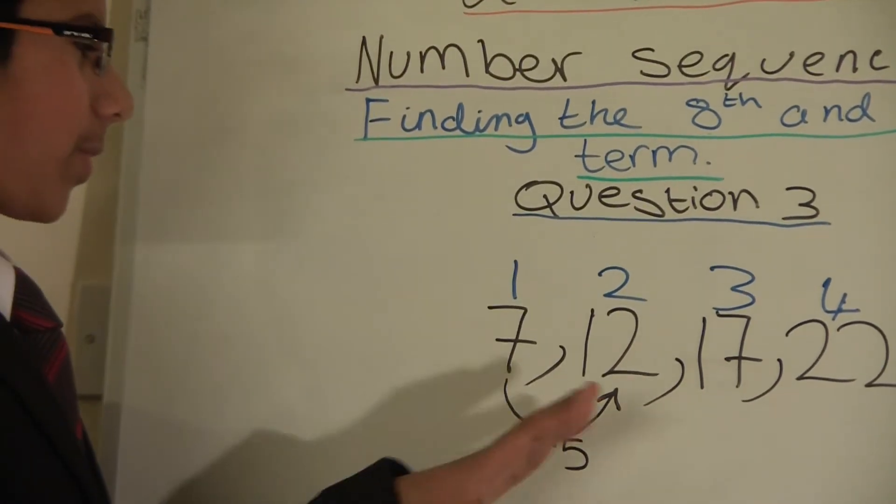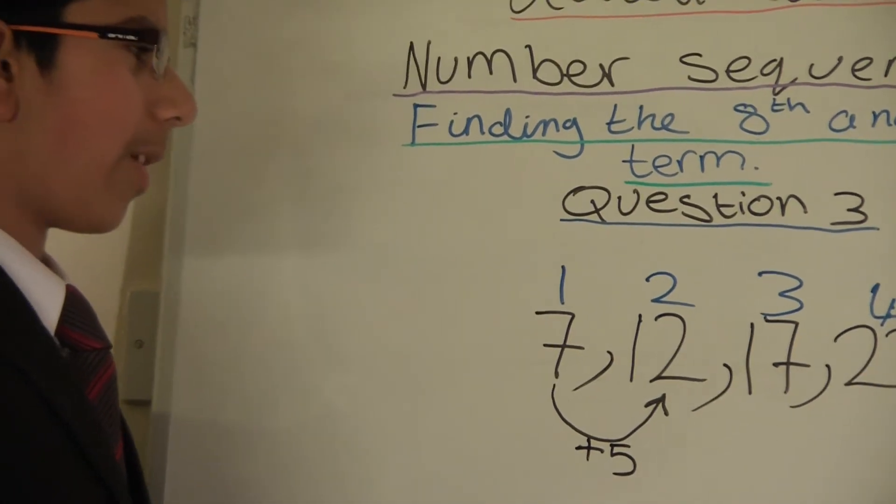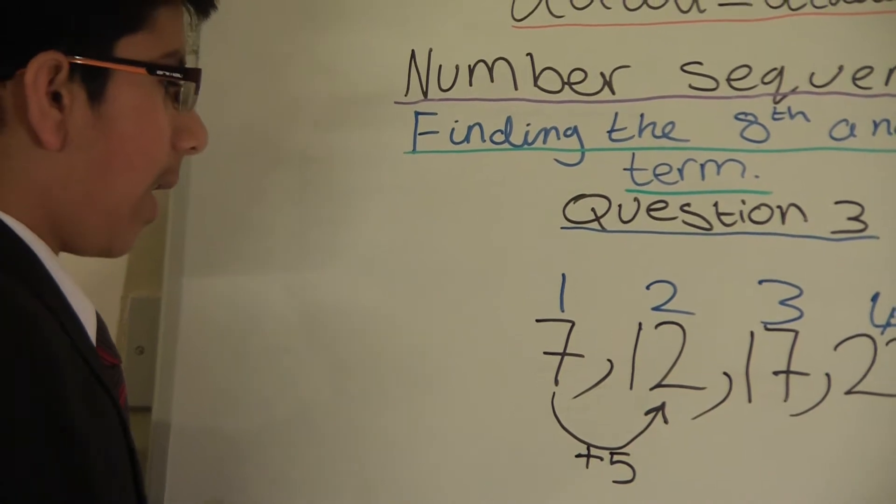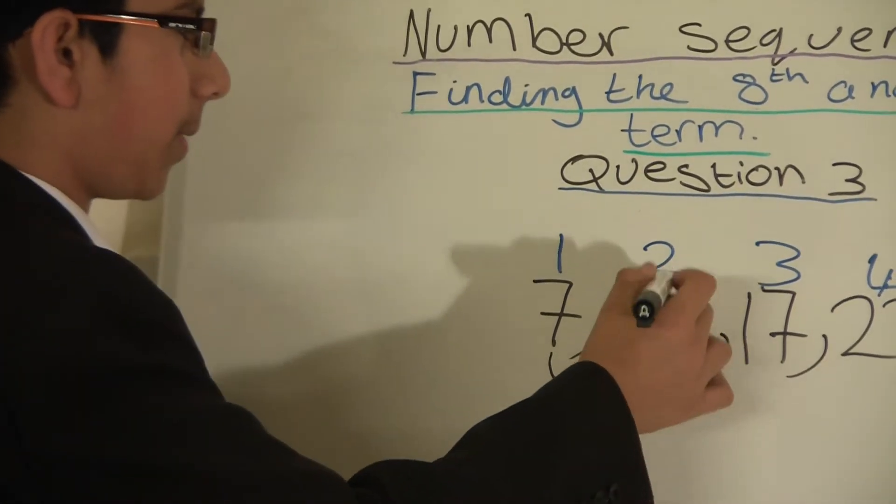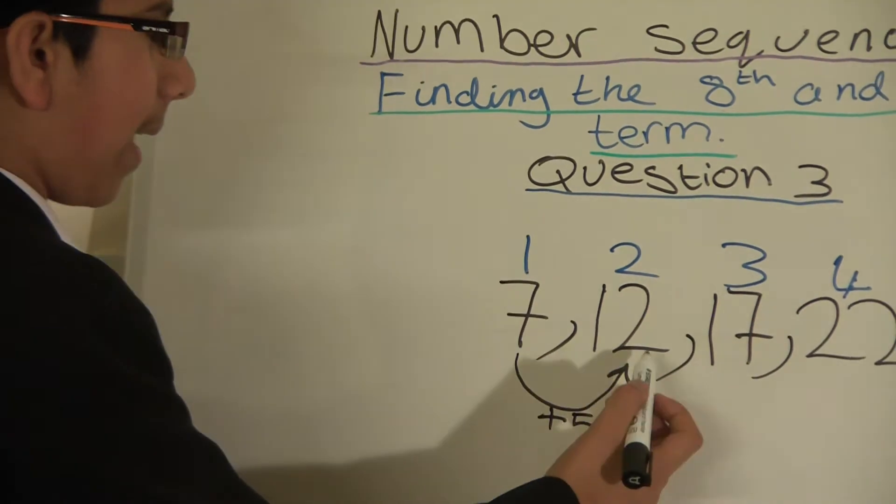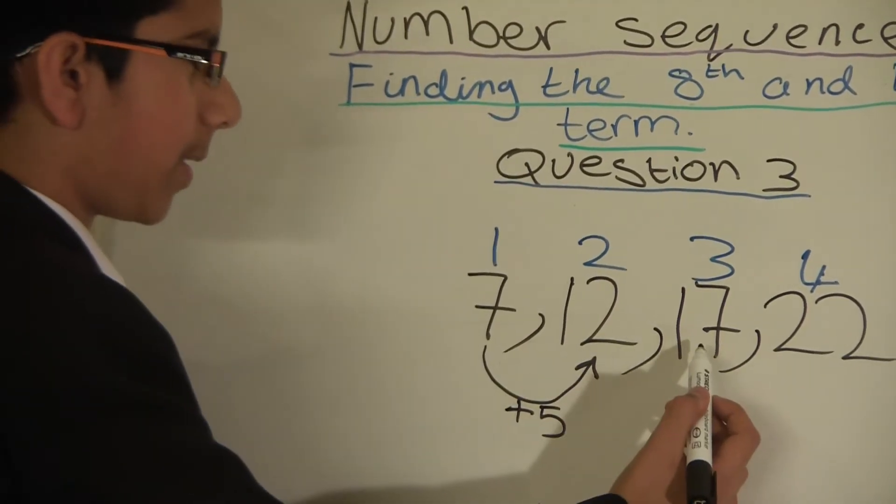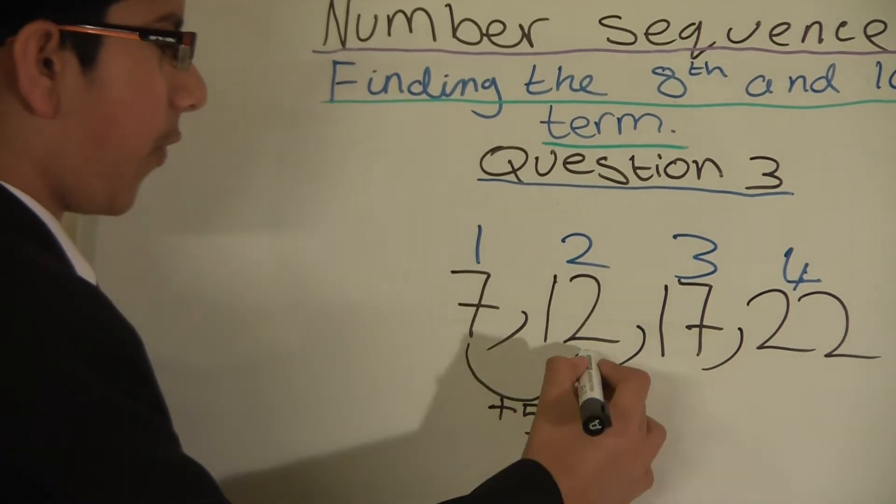We will do this 2 or 3 times so we can find out the proper pattern if it's changing or not. So now we will find the difference between position number 2 and 3. The 2nd position is 12, 3rd position is 17, so the difference is 5.